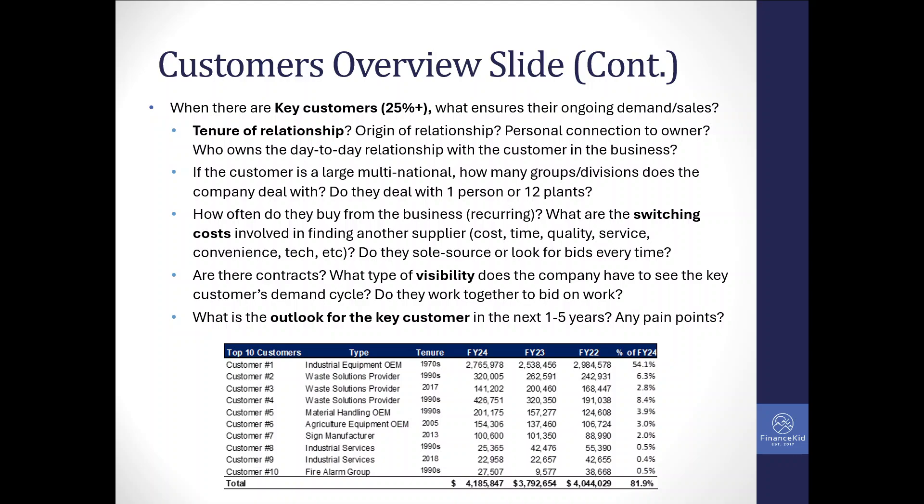The more spread out the customer relationship, the lower the transition risk. If the key customer relationship is one-to-one between owners, there's a greater risk that a new owner on the customer side may start looking at alternatives. But if the business deals with 12 plants and 4 purchasing entities within each plant — that's 48 different people — only one or two might seize the ownership change as an opportunity to reprice. The others may simply continue buying. The more spread out the customer relationship, the lower the risk of transition.